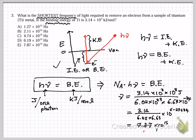And then you will get 7.87 × 10^15 Hz. So the answer is D for here.